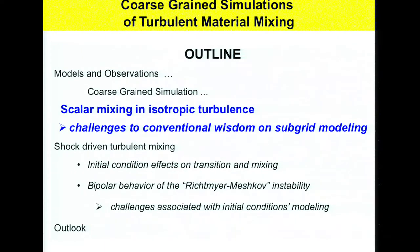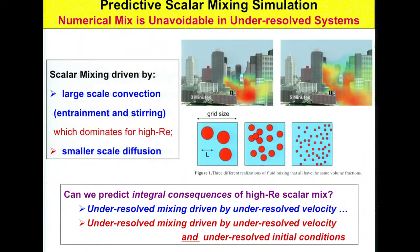The first subject is scalar mixing. For high Reynolds numbers, scalar mixing is basically driven by large-scale convection — the entrainment and stirring part of mixing, often called interpenetration — and this dominates scalar mixing at high Reynolds number. At lower Reynolds numbers, you also need to worry about diffusive mixing.